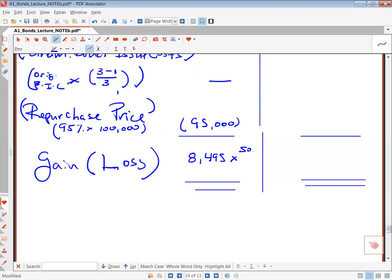Now, all we have to do is multiply by $50,000 over $100,000, and then we'll get our gain or loss on the partial extinguishment of debt, approximately $4,248. So this would be your answer for the partial.